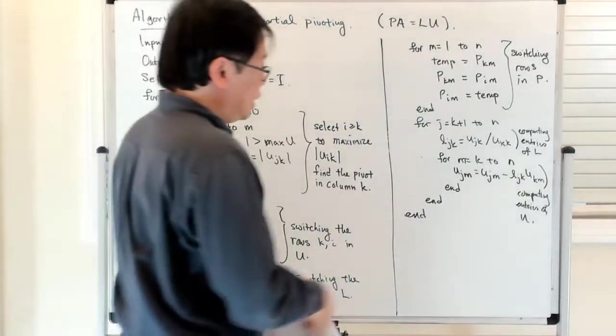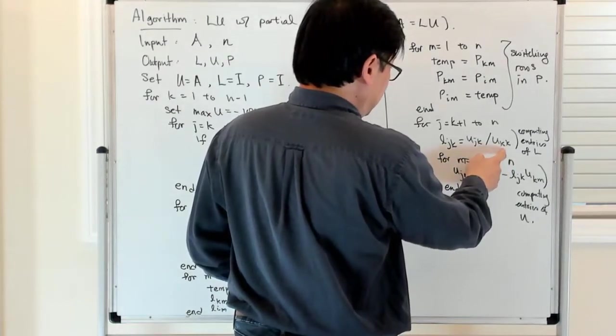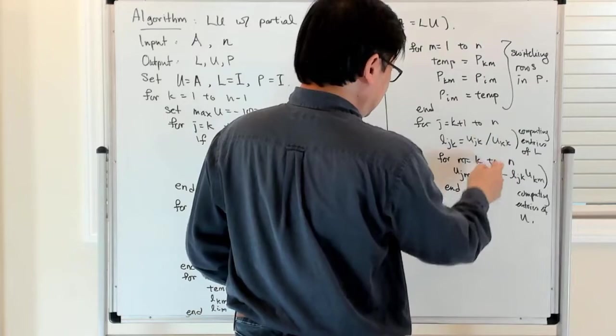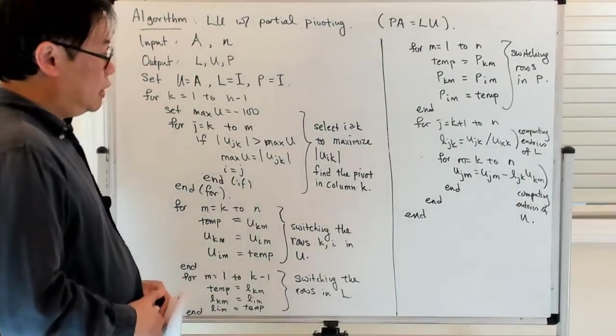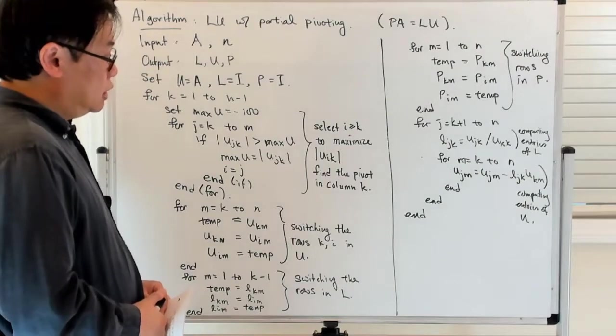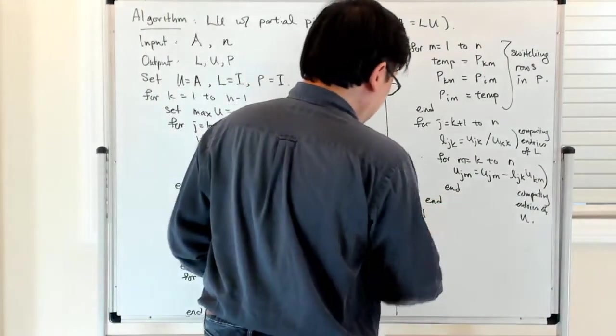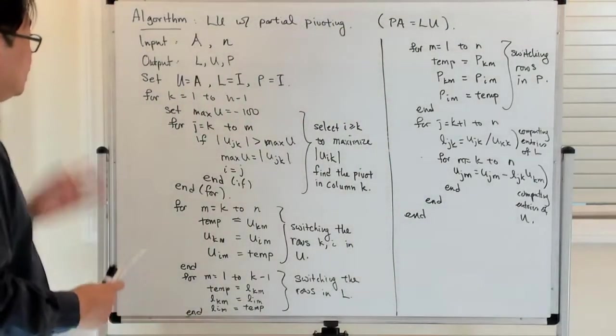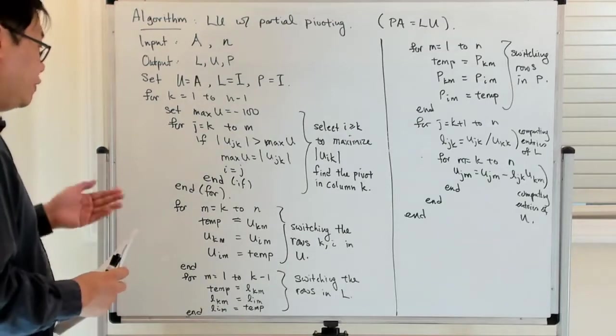Once I've done that, then I update the L matrix with this value and I update the value of U as well. So then once I've done that, I end all of these loops. So that's the basic algorithm for LU partial pivoting.